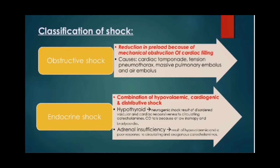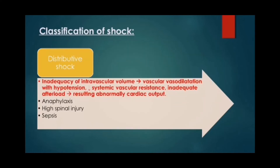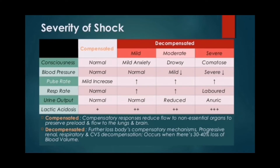Endocrine shock is a combination of hypovolemic, cardiogenic, and distributive shock. Distributive shock involves inadequacy of intravascular volume leading to vascular dilation with hypotension, decreased systemic vascular resistance, and inadequate afterload, resulting in abnormally high cardiac output. Distributive shock is seen in states of anaphylaxis, high spinal injury, and sepsis.